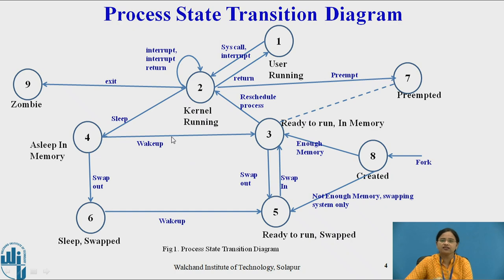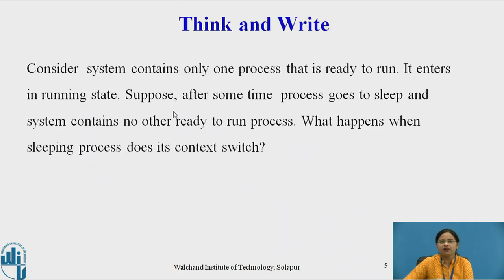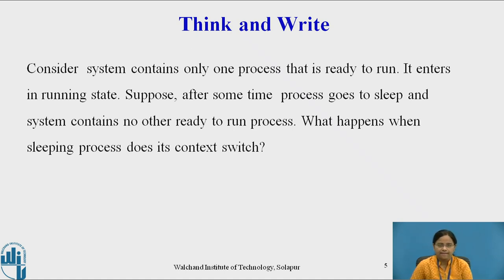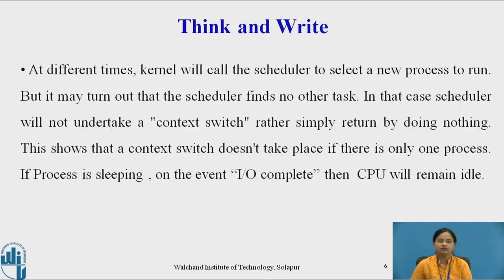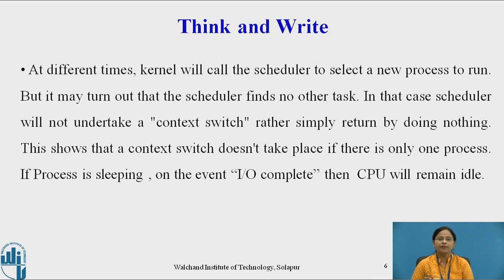This is all about the process state transition diagram. Now consider a scenario where there is only one process in the system. That process enters the running state and then enters the sleep state. What will happen if this sleeping process does a context switch? The kernel will call the scheduler to select a new process to run, but the scheduler finds no other task. In that case, the scheduler will not undertake a context switch but will simply return by doing nothing. This shows that a context switch does not take place when there is only one process in the system.